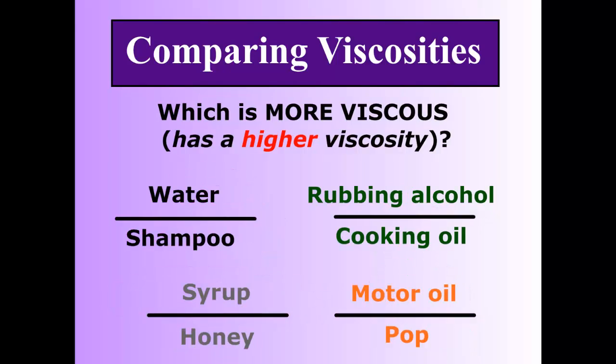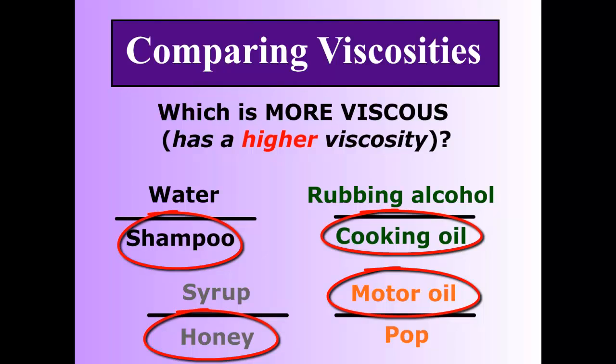Flip it around. Which one has a higher viscosity between the two? Water or shampoo — which one flows slower? Rubbing alcohol and cooking oil? Syrup and honey? Motor oil and pop? Ready? These four should have the higher viscosity: shampoo, cooking oil, honey, and motor oil.